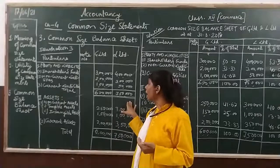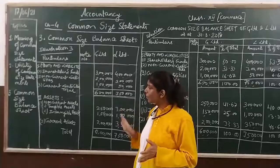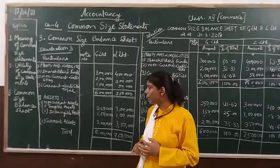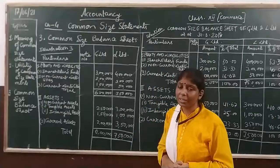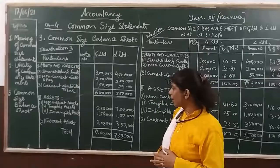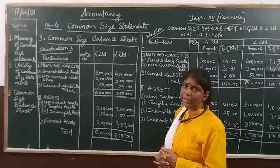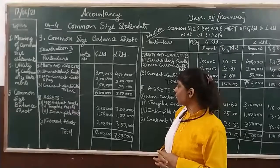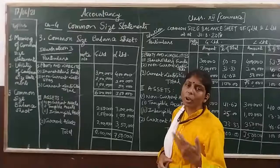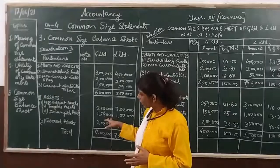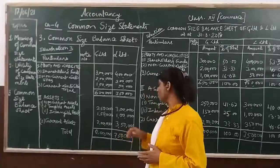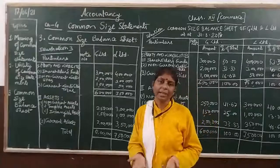The total liabilities for G Limited are 6 lakhs and for L Limited are 7.5 lakhs. On the assets side, there are non-current assets with tangible and intangible sub-items. Tangible assets: G Limited has 5 lakhs and L Limited has 1 lakh. Current assets: G Limited has 2 lakhs and L Limited has 3.5 lakhs. Total assets and total liabilities always balance.